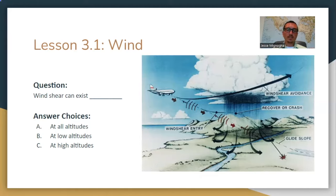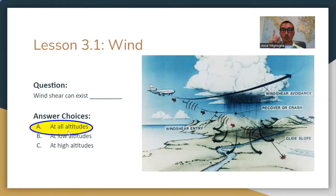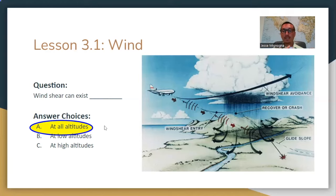Wind shear can exist at all altitudes. It's more dangerous at lower altitudes, especially for manned aviation. I've said in past videos: when you see 'all' as an answer choice, it tends to be correct. I've seen a lot of practice questions for the Part 107 exam, and 95-plus percent of the time when there is an 'all' answer choice, it has been the answer. If you have no clue and there's an 'all' answer choice, go with 'all.'